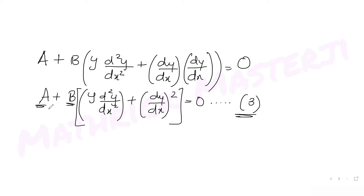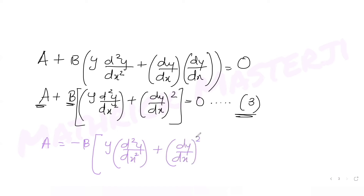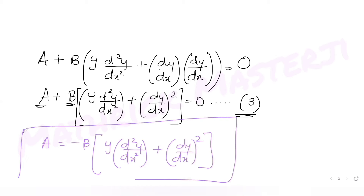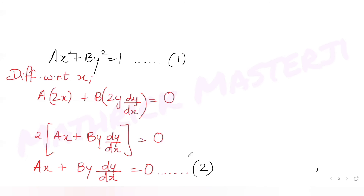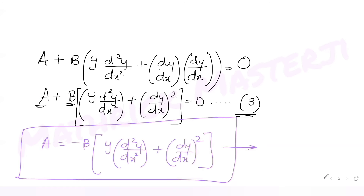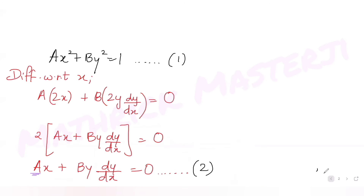To eliminate the constants a and b, from equation 3 we write a = −b[y·(d²y/dx²) + (dy/dx)²]. Now we substitute this expression for a into equation 2.